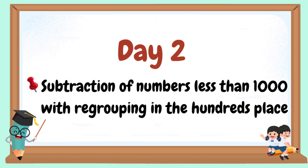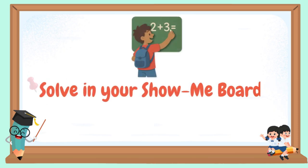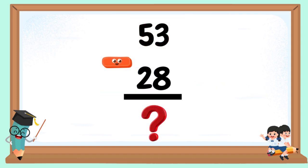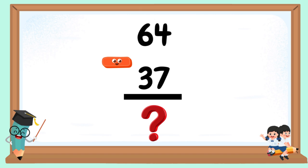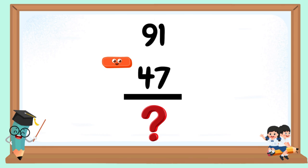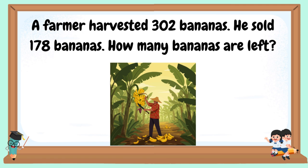Welcome to our day 2: subtraction of numbers less than 1,000 with regrouping in the 100's place. Solve in your show me boards. A farmer harvested 302 bananas. He sold 178 bananas. How many bananas are left?